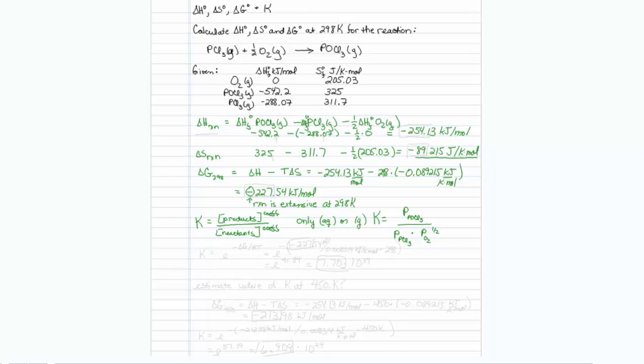The next question is, figure out the actual numeric value of K. And K, you may remember, is also equal to E to the minus delta G divided by RT. So substituting in our values, that will be an E to the minus, minus 227.54 divided by R.